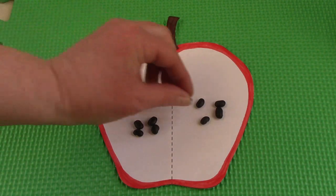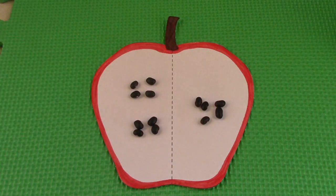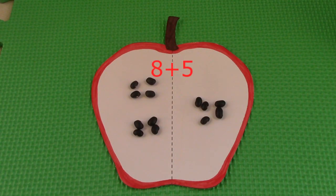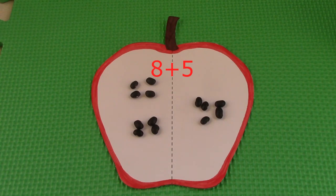If we add 1 more seed to this side, it's going to be 8 plus 5. If 8 plus 4 was 12, what do you think 8 plus 5 will be? That's right. It's 13.